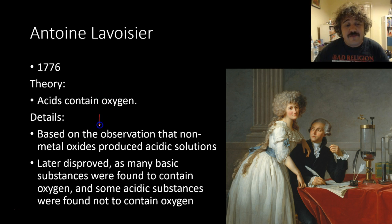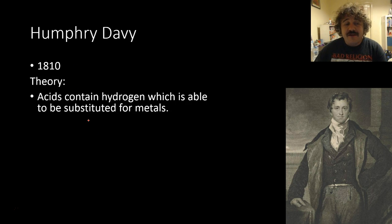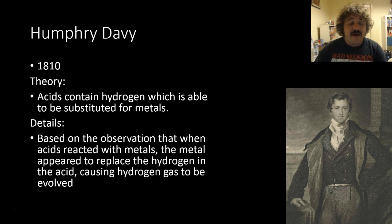So let's move on to over to England to Humphry Davy and in 1810 Humphry Davy came up with a theory that acids contain hydrogen and that this hydrogen is able to be substituted for a metal. Basically this is because when you put a metal in with an acid hydrogen gas is evolved. Okay so that made it look as though the hydrogen was being replaced by the metal.